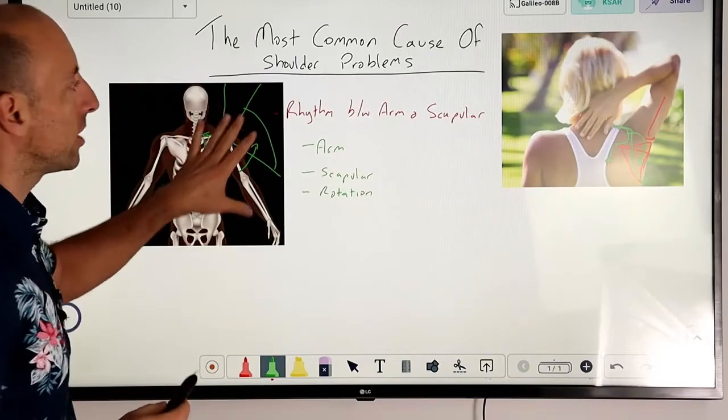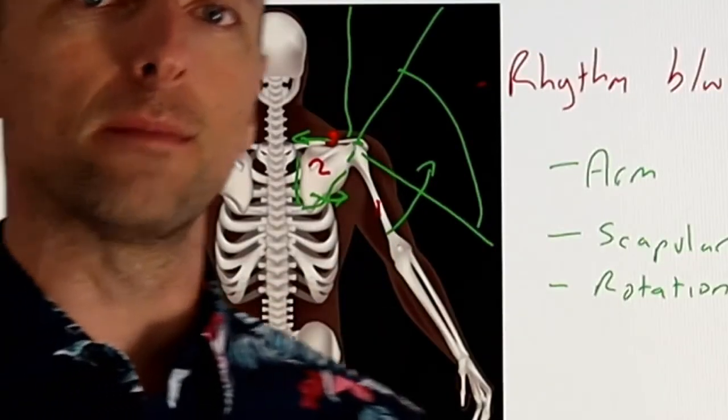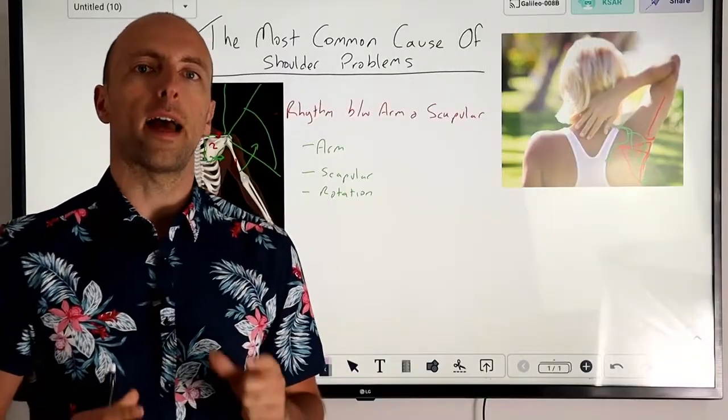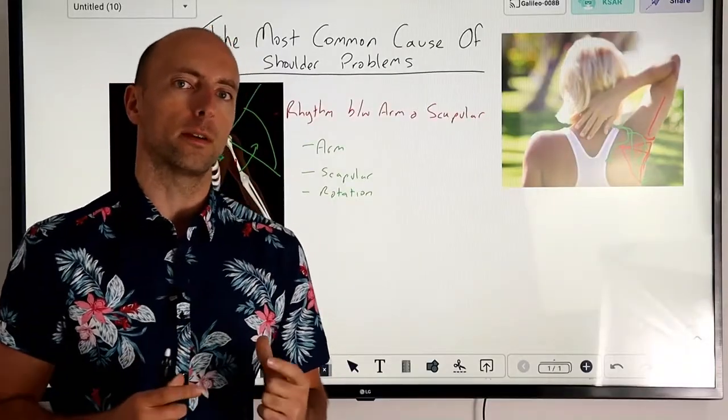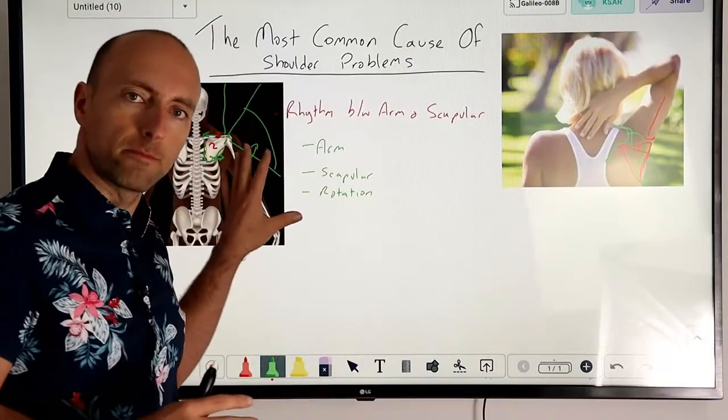When we're looking at shoulder problems in general, this mechanism with what we call our scapulohumeral rhythm is key to maintaining good healthy function of the shoulder. When this mechanism breaks down we see a ton of different issues coming through.